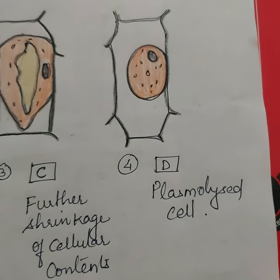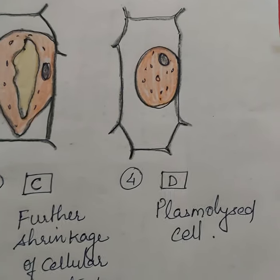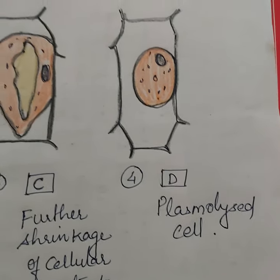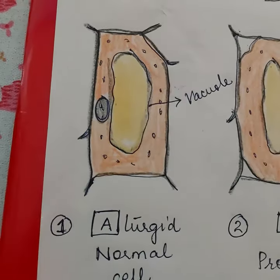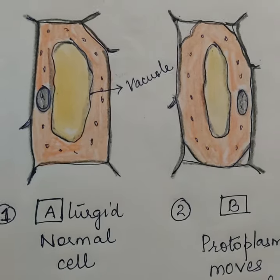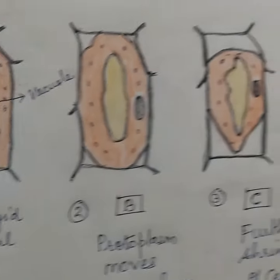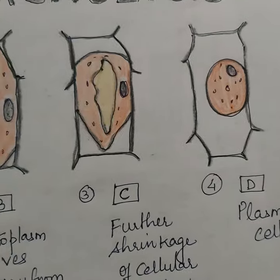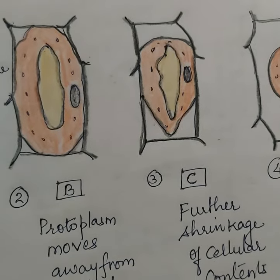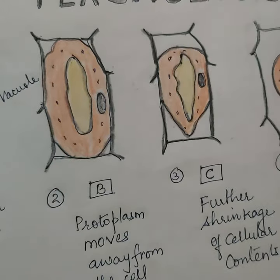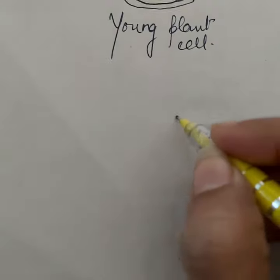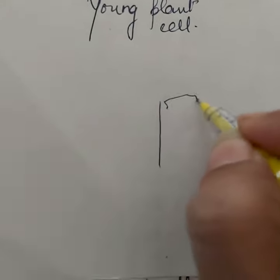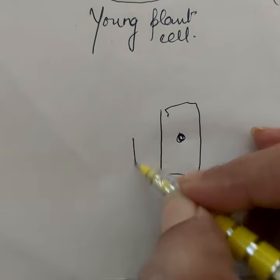When a plasmolysed cell is again kept in a dilute solution, it will gain water due to concentration difference and regain its original shape. This phenomenon which is the opposite of plasmolysis is called deplasmolysis. This was when the plant is kept in hypertonic solution. Now if I place a plant cell in hypotonic solution, that is a dilute solution — what will happen?